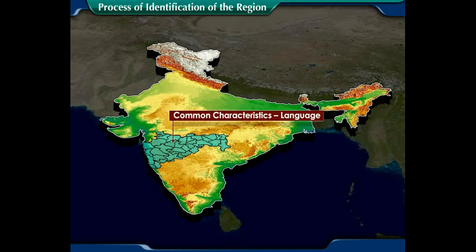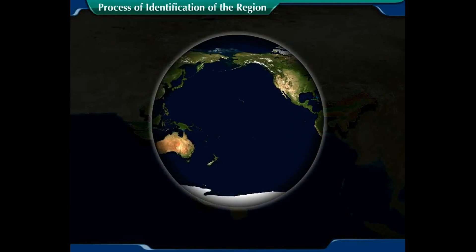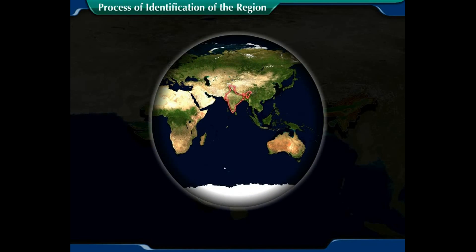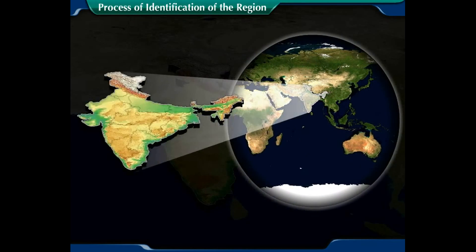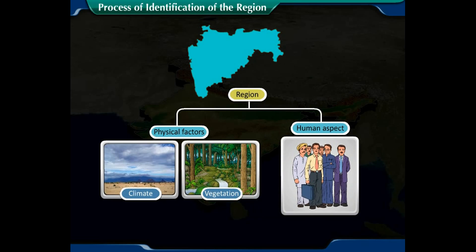What makes a region most significant are the common characteristics of that region. In geography, the concept of a region is very important. A particular region focuses on a particular area of the earth, studying both the physical as well as the human aspects, which interact with each other and work in unity.